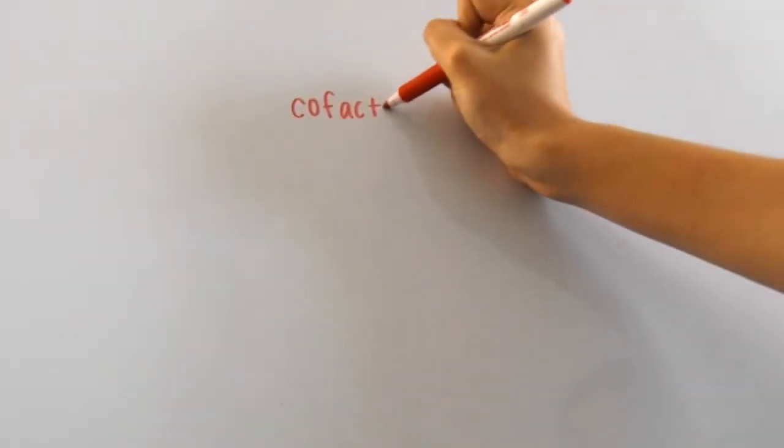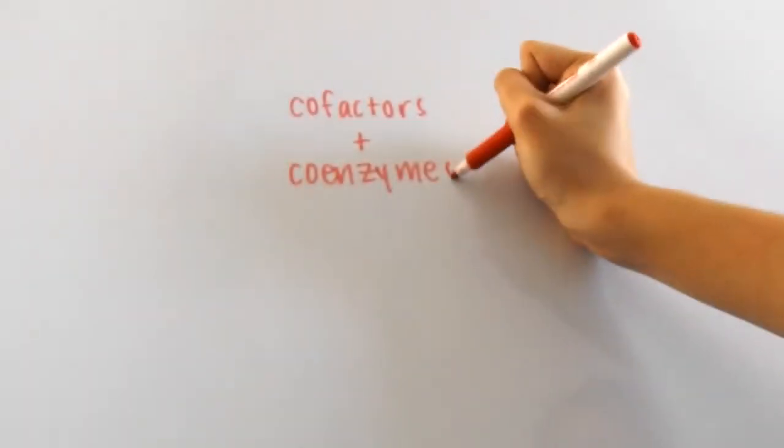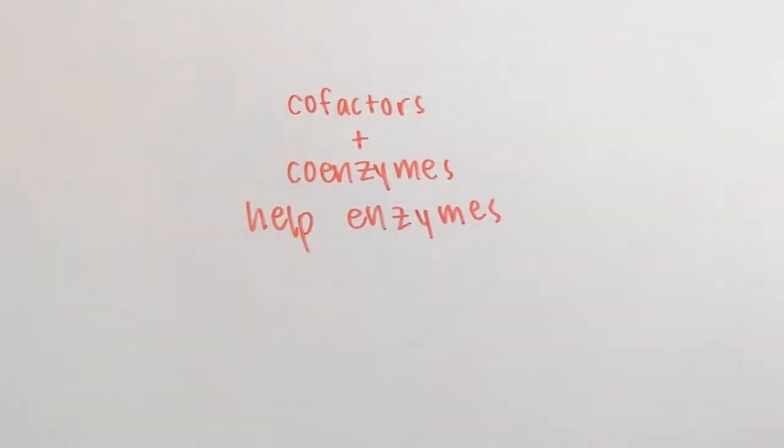Furthermore, there are these other molecules called cofactors and coenzymes. Some enzymes need these molecules in order to function properly. Cofactors and coenzymes help the enzyme through many ways, perhaps through being the raw materials for a reaction or changing the enzyme's shape slightly.